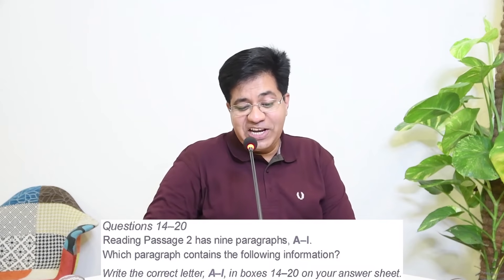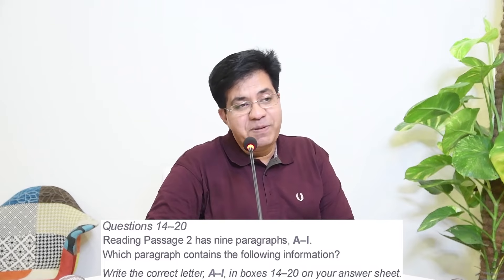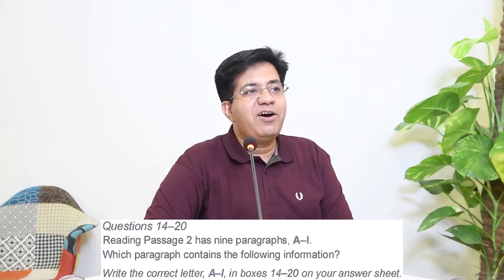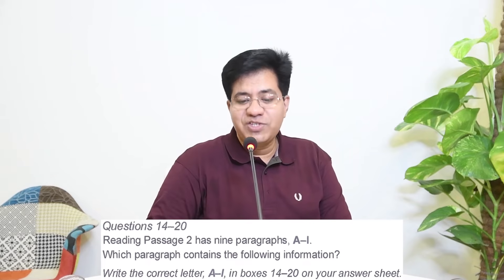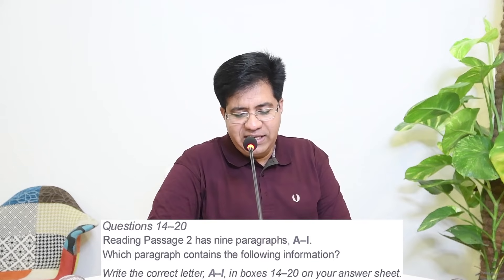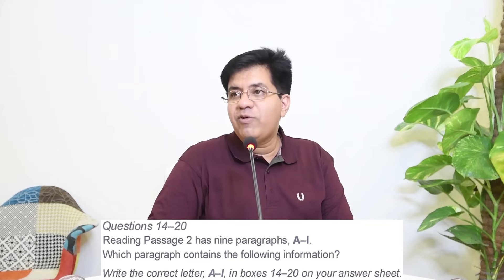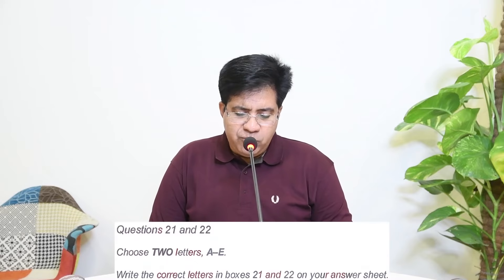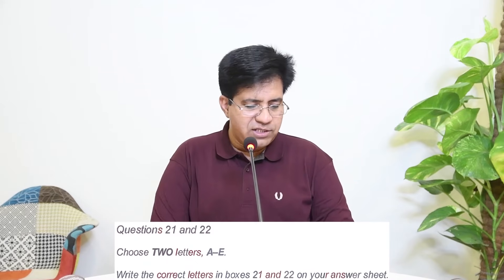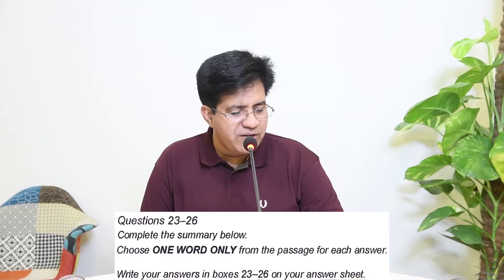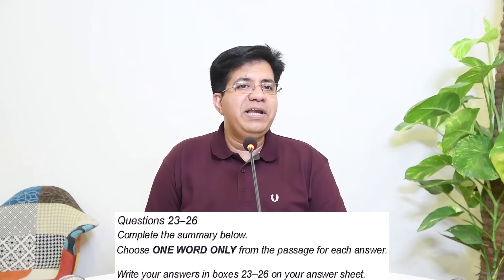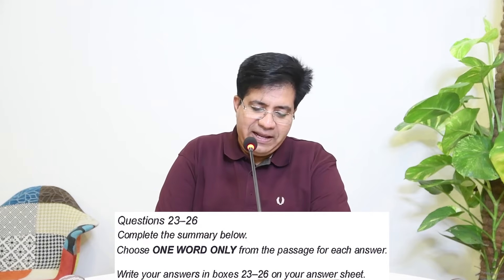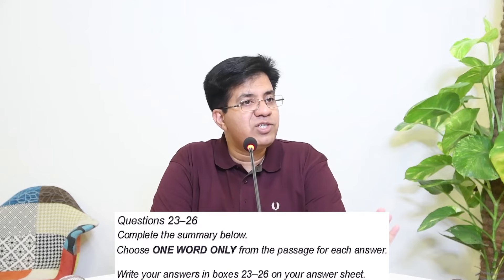Questions 14-20 ask which paragraph contains the following information — Type B, don't touch them yet. Questions 21-22 are double multiple choice. Questions 23-26 are one-word-only summary completion. Start with questions 23-26 as they are Type A.